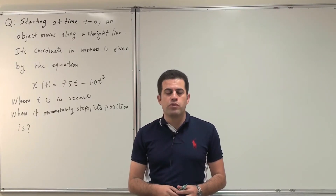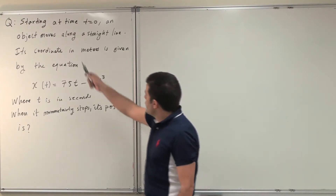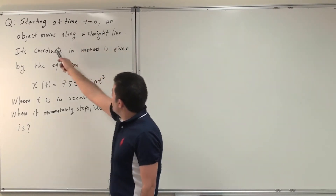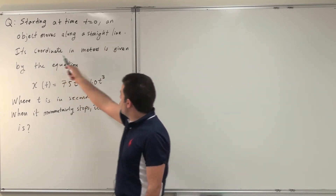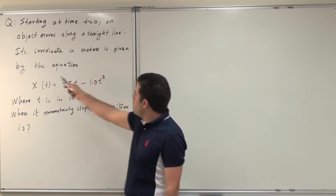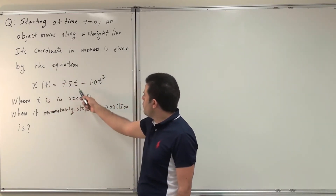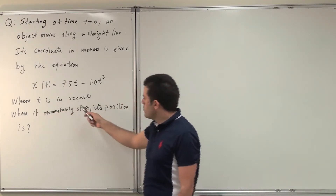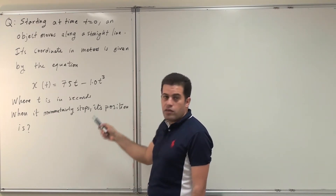Assalamu alaikum. Today we're solving questions from chapter 2. The question reads: starting at time t equals 0, an object moves along a straight line. Its coordinate in meters is given by the equation x of t equals 75t minus 1 multiplied by t cubed, where t is in seconds. When it momentarily stops, its position is?